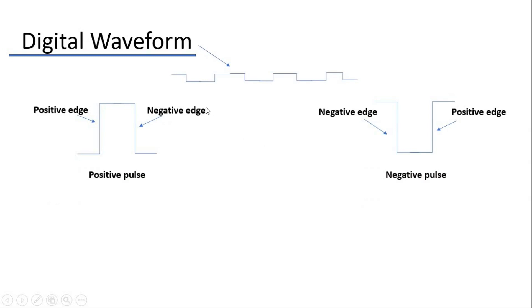Our next topic is digital waveform. A digital waveform is made up of a series of positive and negative pulses. There are two types of pulses: positive pulse and negative pulse. A positive pulse is produced when the voltage goes from low level to high level and then back to low level. A negative pulse is produced when the voltage goes from high level to low level and then back to high level.